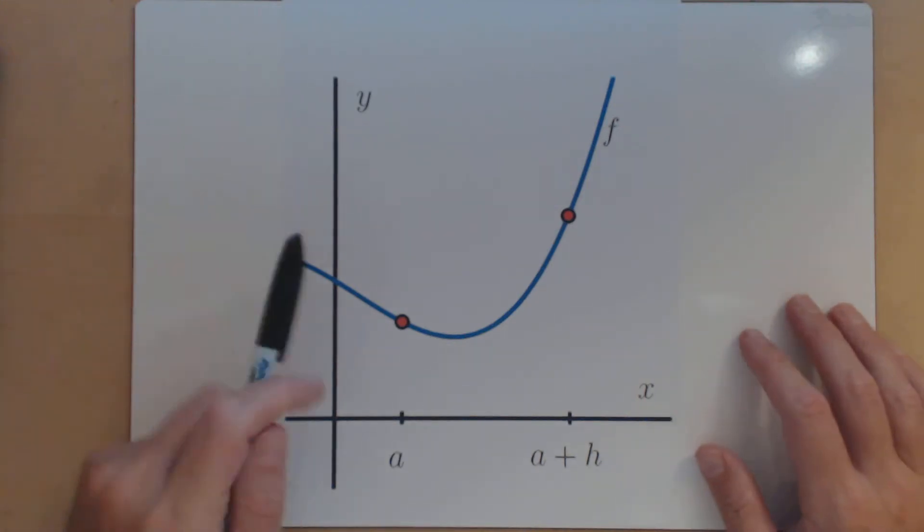So, we're dealing with our graph of f, some general function, and we're looking at points at inputs of a and a plus h.